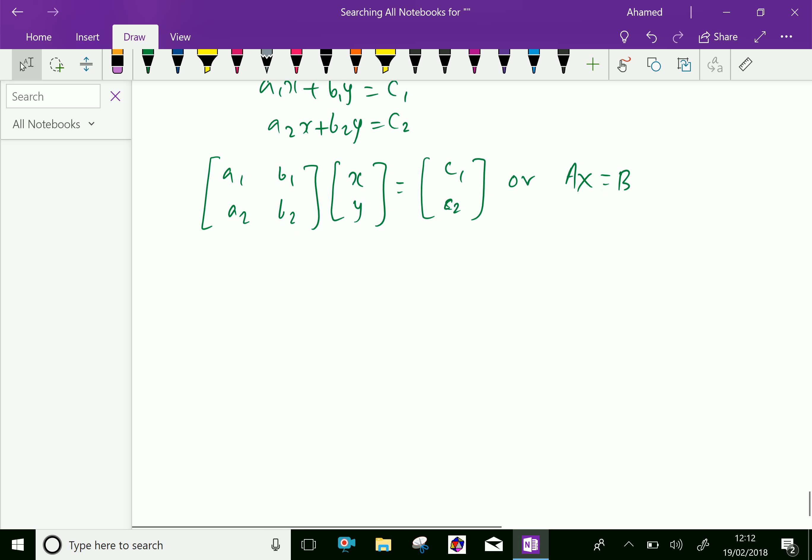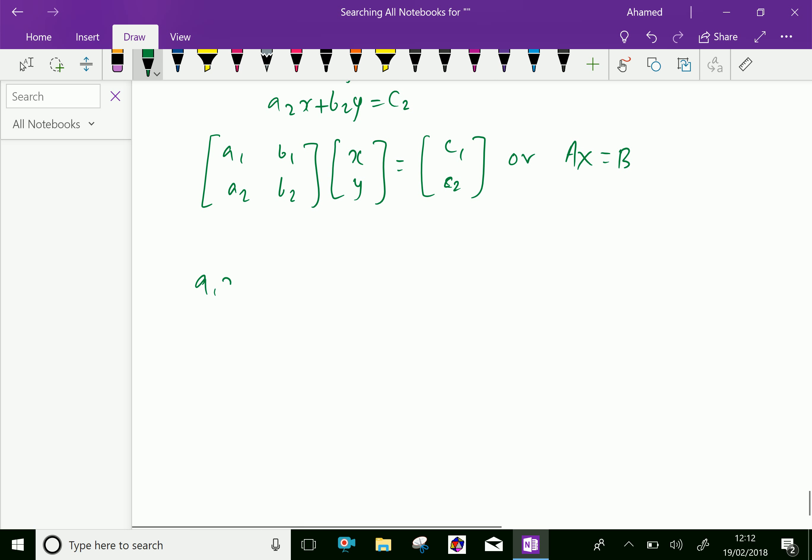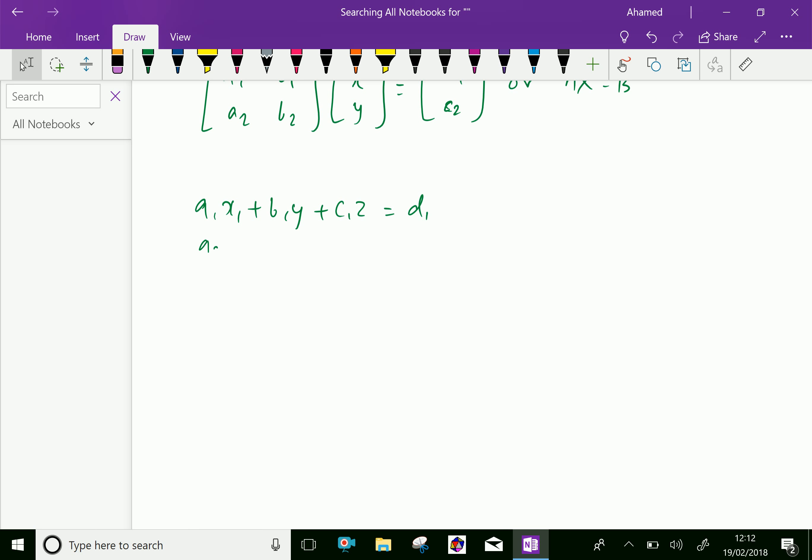Similarly in three by three order matrices, consider three equations: a1x plus b1y plus c1z equals d1, a2x plus b2y plus c2z equals d2, and a3x plus b3y plus c3z equals d3. We have three simultaneous equations and three variables.